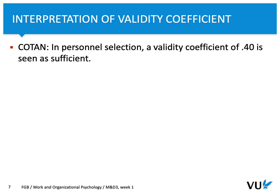Just as with reliability, when discussing validity we can consider two types of standards. First, there are quotient standards important for individual diagnosis. According to those standards, a test should be used only if validity — for example, convergent validity — is at least 0.40. This is especially important for personnel selection, where you make decisions affecting other people's futures. The same applies to criterion validity: it should be at least 0.40.